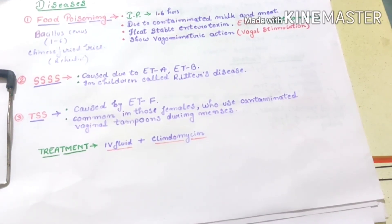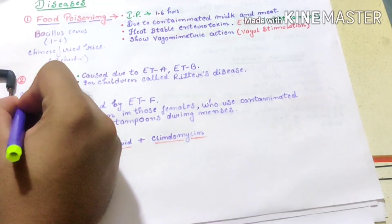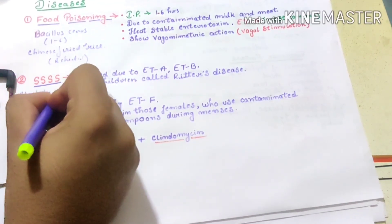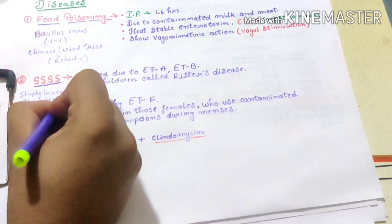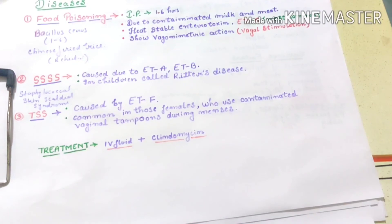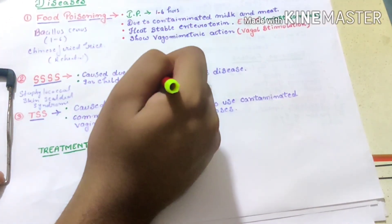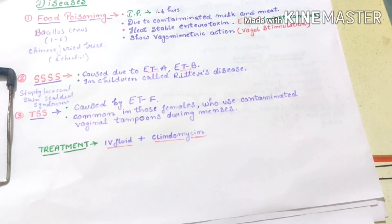Second is SSSS, staphylococcal skin scalded syndrome. There are two enterotoxins that are commonly involved: ETA and ETB. The important thing is to remember this. And in children, it is called Ritter's disease.